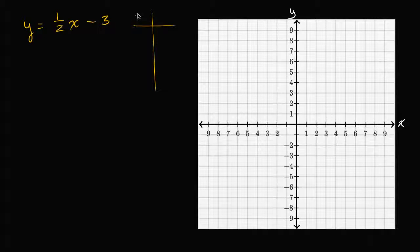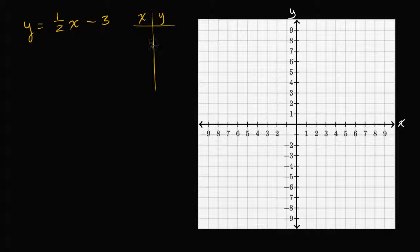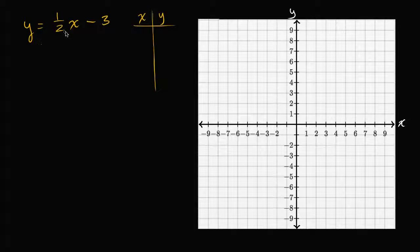So let's set up a little table here: x comma y. We could just try out a couple of x values and then figure out what the corresponding y values are. I'm going to pick x values where it's fairly easy to calculate the y value. So when x is equal to zero, you're going to have one half times zero minus three — well then y is going to be negative three.